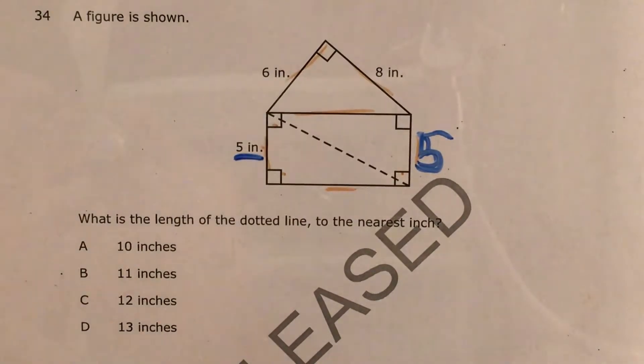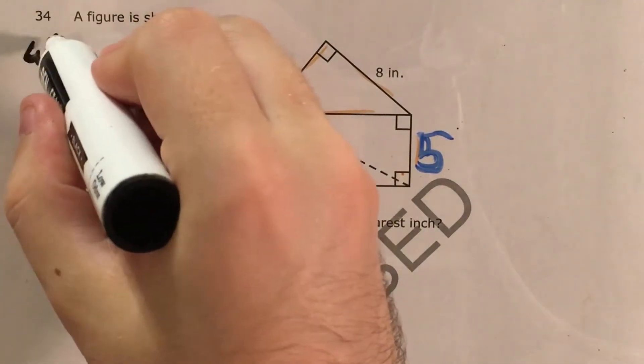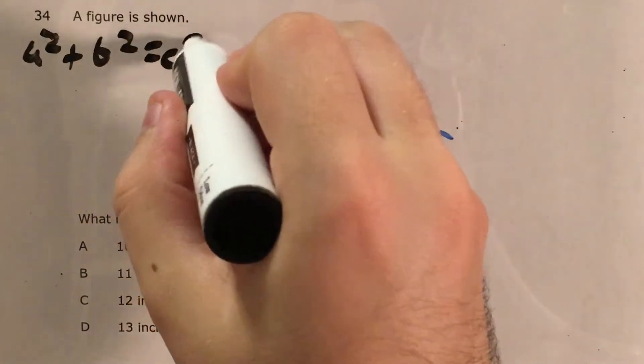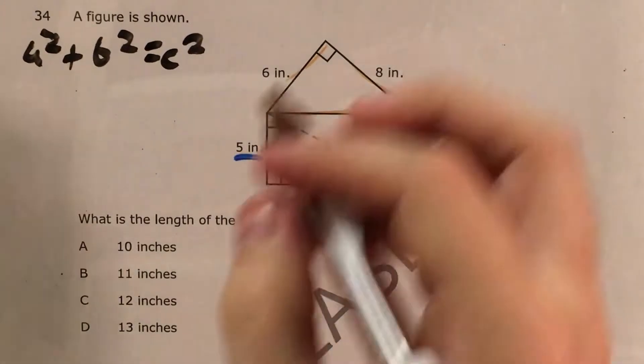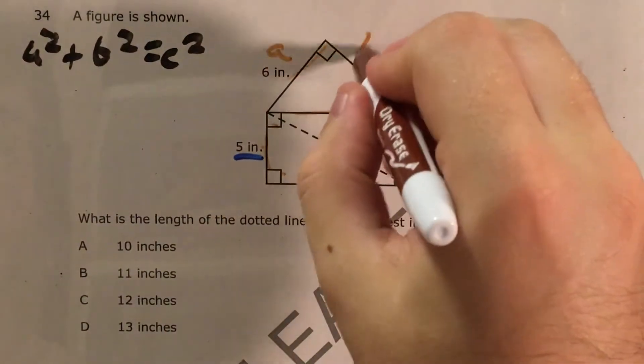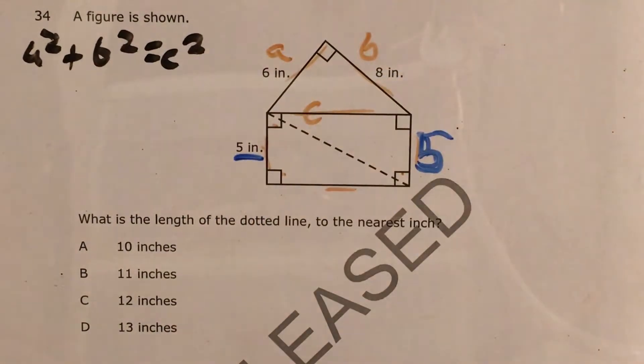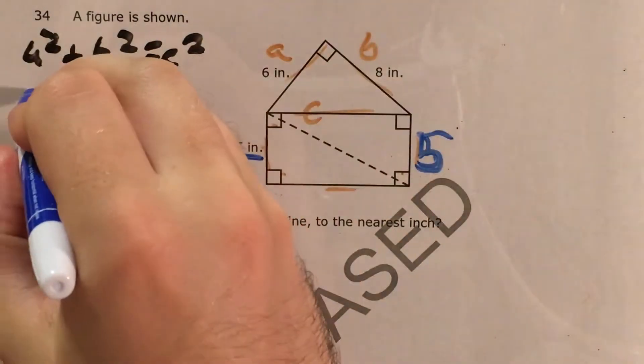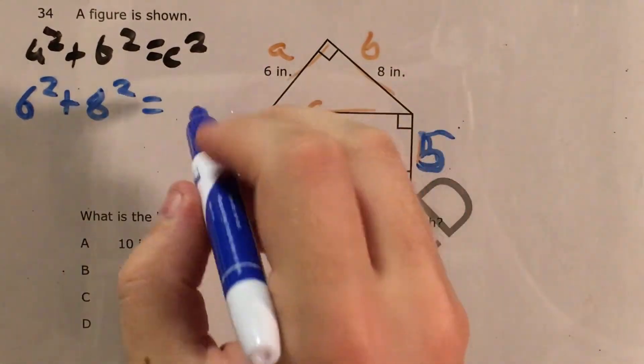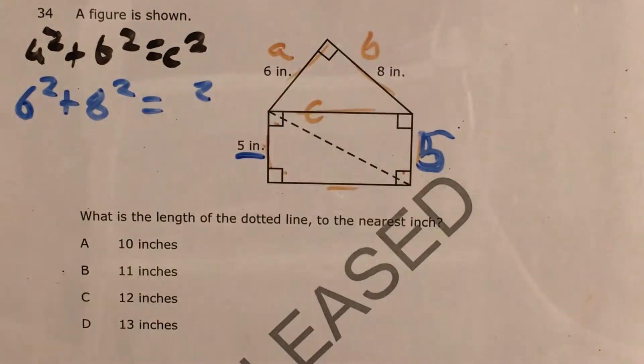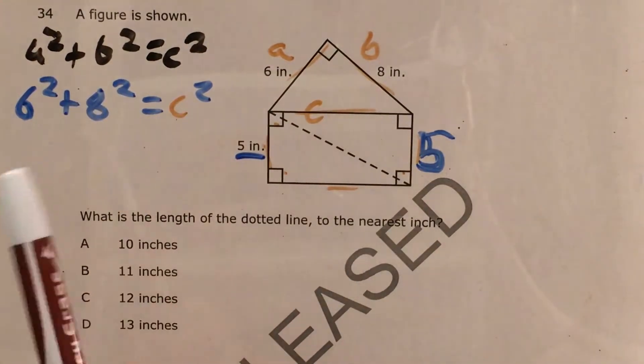So let me go ahead and set up the Pythagorean theorem. A squared plus B squared equals C squared. My two legs, I'm going to name A and B. My hypotenuse is C. So then I know that 6 squared plus B is 8, so 8 squared equals, and I don't know C yet. So I'll keep that in brown. But I know that C squared is whatever we get when 6 squared and 8 squared are added together.